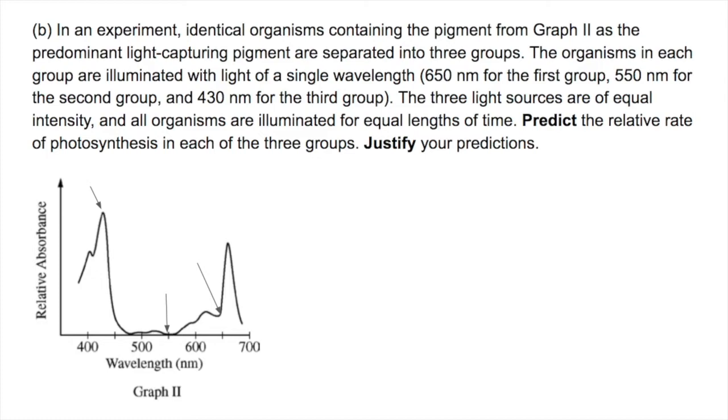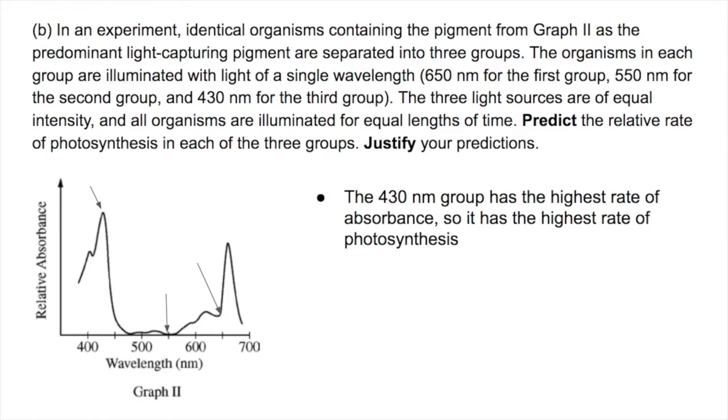Predict the relative rate of photosynthesis in each of the three groups. Justify your predictions. So this arrow on the left is our 430 nm group. It has a very high rate of absorbance, and so it probably has the highest rate of photosynthesis because it's going to be absorbing more light energy, and light energy is what drives the process of photosynthesis.